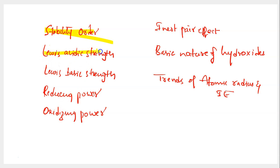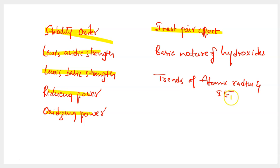The second important topic is Lewis acidic strength — comparing a given set of molecules in terms of their Lewis acidic strength. Similarly, comparing the given set of molecules in terms of Lewis basic strength is also an important point. Then there is reducing power and oxidizing power comparison. After that, questions in and around inert pair effect are also important. There are a few consequences of inert pair effect, like inert pair effect is going to affect the oxidation state, thereby affecting stability.